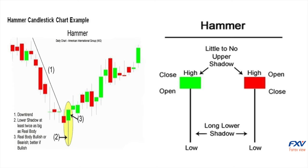The hammer candlestick pattern is frequently observed in the forex market and provides important insight into trend reversals. It's crucial that traders understand there is more to the hammer candle than simply spotting it on a chart. Price action and the location of the hammer candle within the existing trend are both crucial validating factors. The hammer candlestick is found at the bottom of a downtrend and signals a potential bullish reversal. The most common hammer candle is the bullish hammer.